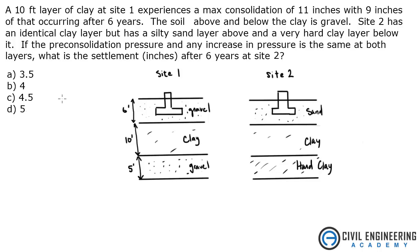The problem states a 10-foot layer of clay at Site 1 experiences a maximum consolidation of 11 inches, with 9 of that occurring after 6 years. The soil above and below the clay is gravel. Site 2 has an identical clay layer but has a silty sand layer above and a very hard clay layer below it. If the pre-consolidation pressure and any increase in pressure is the same at both layers, what is the settlement in inches after 6 years at Site 2?